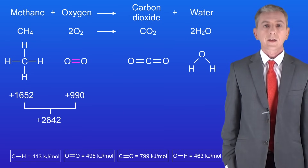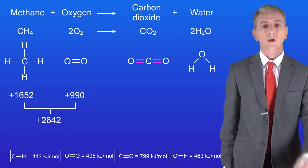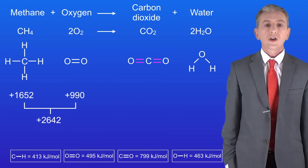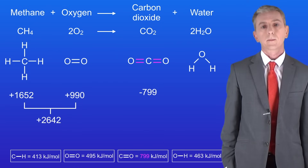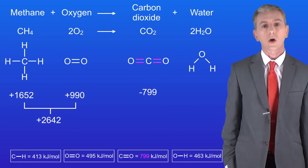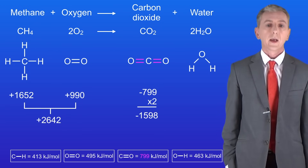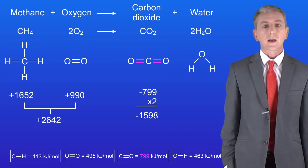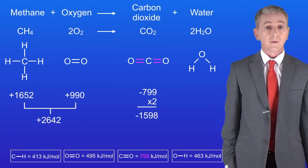On the right hand side we're going to make these bonds in the carbon dioxide molecule. The energy of the carbon to oxygen bond is 799 kilojoules per mole. Each molecule contains two carbon to oxygen bonds so we need to multiply this by two, giving us 1598. We also need to make this negative as we're making these bonds.